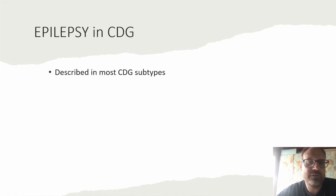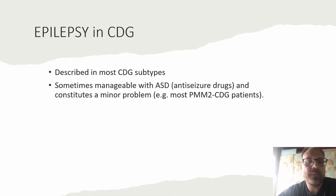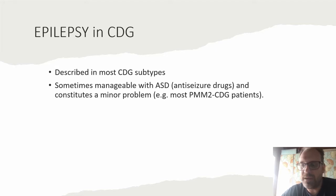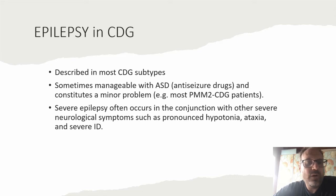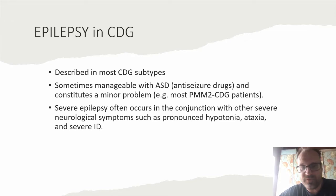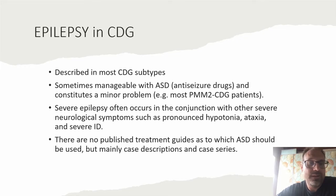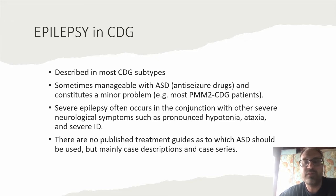What do we know about epilepsy in CDG? It has been described in most CDG subtypes — there are very few subtypes where no patients have experienced epilepsy. In some subtypes, such as PMM2-CDG, it is often manageable with anti-seizure drugs and constitutes a minor problem. In patients with severe epilepsy, this occurs in conjunction with other severe neurological symptoms such as pronounced muscular hypotonia, ataxia, or severe intellectual disability. There are no published treatment guidelines, so we rely mainly on published case descriptions and case series.